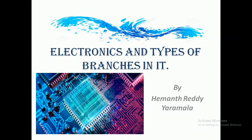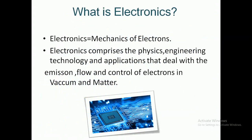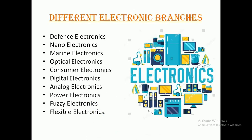Let's get into the presentation. Please do watch till the end to know more. What is electronics? Electronics is nothing but the mechanics of electrons. Electronics comprises the physics, engineering, technology, and applications that deal with emission, flow, and control of electrons in vacuum and matter. The different electronic branches are: defense, nano, marine, optical, consumer, digital, analog, power, fuzzy, and flexible electronics.